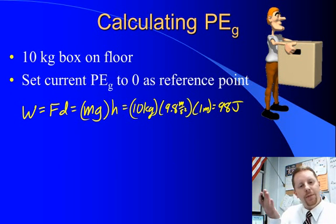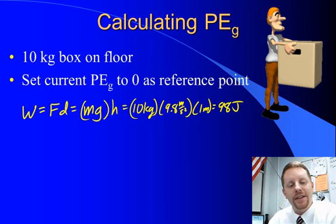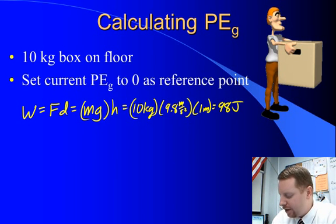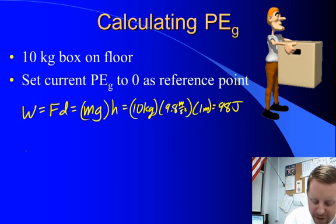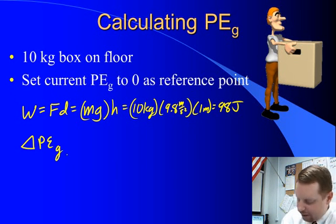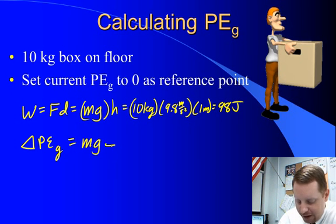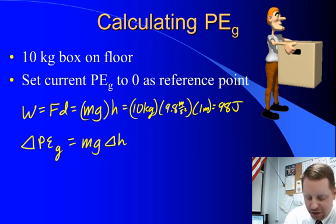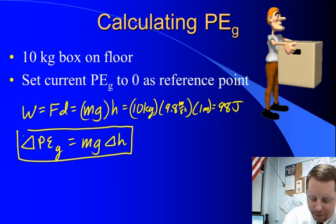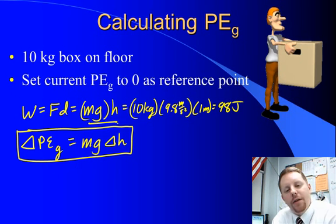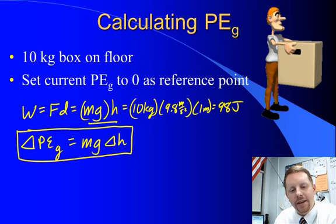So once the box is one meter above the ground, it has a gravitational potential energy 98 joules higher than when it was sitting on the ground. We transferred our stored energy to the box by doing work on it. The change in an object's gravitational potential energy, delta PE gravitational, is equal to mg times delta h. So we have derived the formula for change in gravitational potential energy: mass times acceleration due to gravity times the change in height.